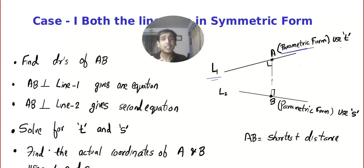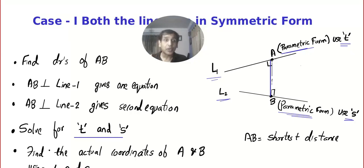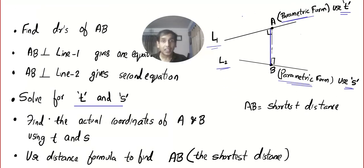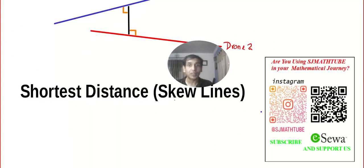Use the parameter t — you can use any letter. Convert the second line into parametric form using another parameter, I'm using s; you can use lambda, mu, anything you like. Then find the direction of AB, which is supposed to be the shortest distance. Apply the condition of perpendicularity and create two equations, then solve for s and t. Take a screenshot — when we work out problems you'll understand more.